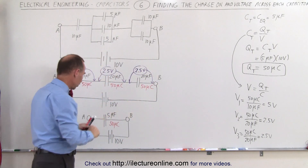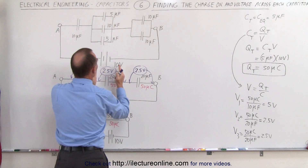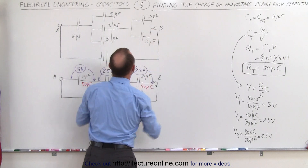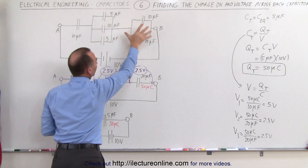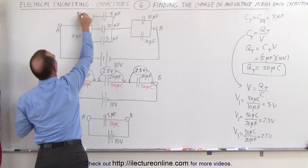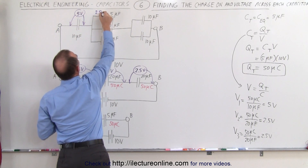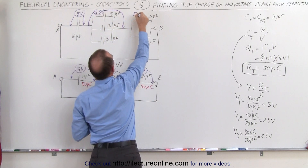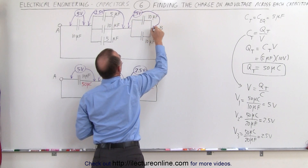Going back to the circuit above, since each equivalent capacitor corresponds to parts of the original circuit, we can say there is 5 volts across the first capacitor, 2.5 volts across the middle group of three capacitors, and 2.5 volts across the last group of two capacitors.